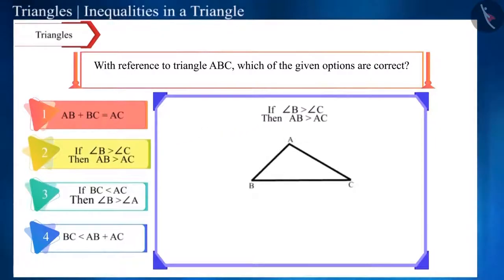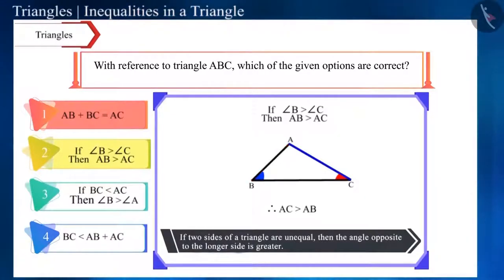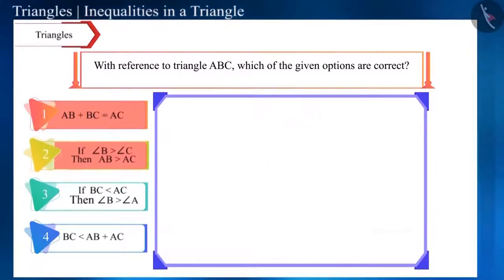According to the second option, angle B is greater than angle C. So the side opposite to angle B will be greater than the side opposite to angle C. That is, side AC will be greater than side AB. Or, in other words, side AB will be smaller than side AC. This means that this option is also incorrect.